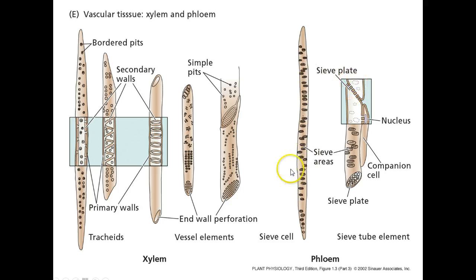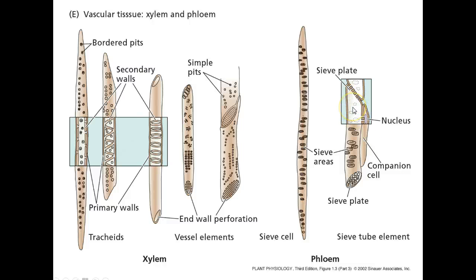Water goes up without crossing cell membranes, and some minerals do. But for the most part, anything in the phloem, a protein grabs it and moves it into the next cell. The two parts are the companion cell and then the sieve plate. The companion cell has a nucleus and the sieve plate doesn't — it's living, but the companion cell provides all of the proteins and things that it needs to carry out its functions.